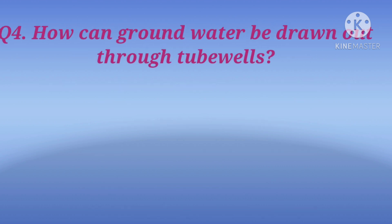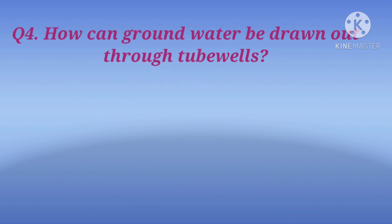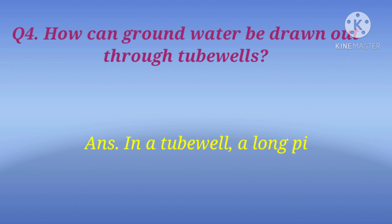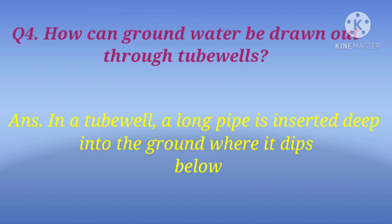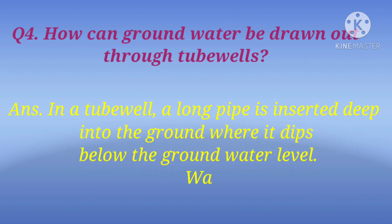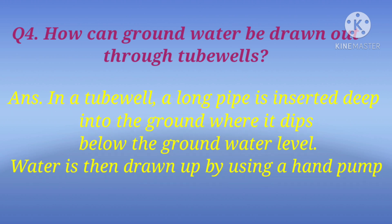The next question is: how can groundwater be drawn out through tube wells? The answer is: in a tube well, a long pipe is inserted deep into the ground where it dips below the groundwater level. Water is then drawn up by using a hand pump or an electric pump.